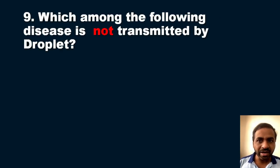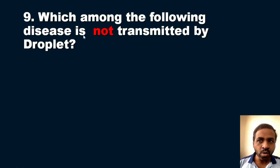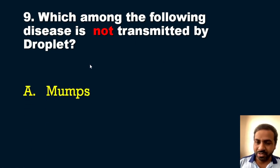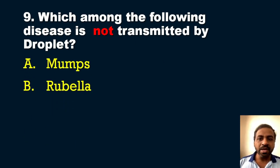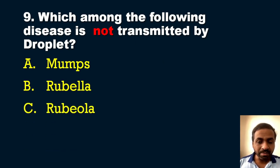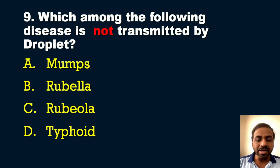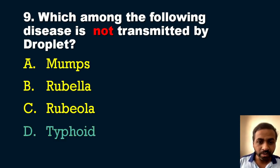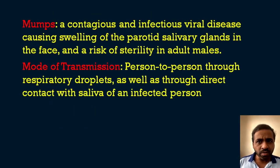The ninth question, from community health nursing: which among the following diseases is NOT transmitted by droplet? Options: A) Mumps, B) Rubella, C) Rubeola, D) Typhoid. The answer is option D, typhoid. Mumps is a contagious viral disease causing swelling of the parotid salivary glands, transmitted person to person through respiratory droplets and direct contact with saliva of an infected person.